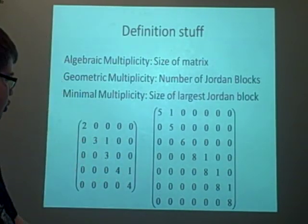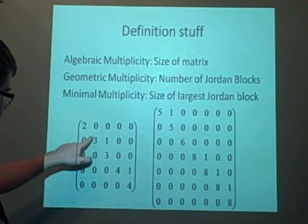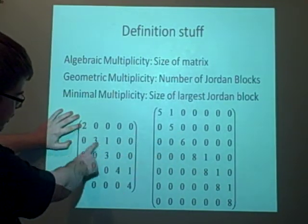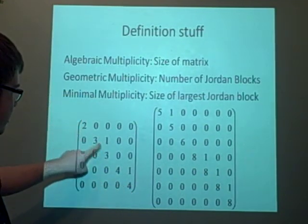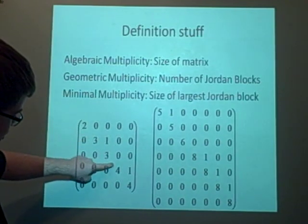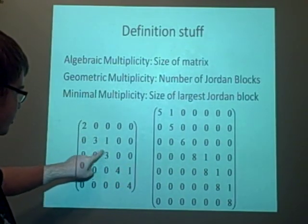This is what a Jordan Normal form would look like, this or this. And as you can see, we've got different eigenvalues going down here, the eigenvalues are 2, 3, and 4. And we can see that they're in blocks because if we put blocks around here, we can see we've got two 4s, 3, and they've got the 1s above them as well.